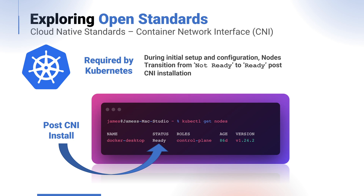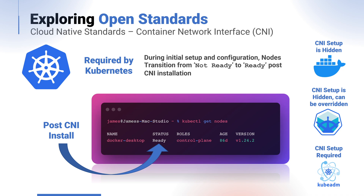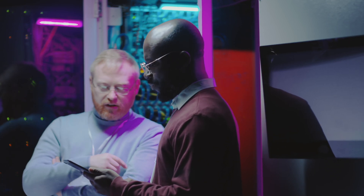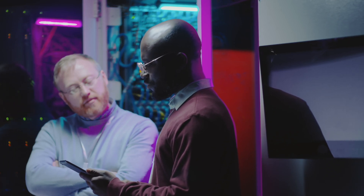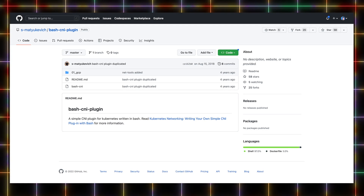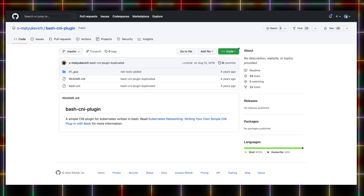A CNI compatible implementation needs to be installed to transition the Kubernetes nodes from not ready to ready. Some convenient Kubernetes distributions, like the one embedded with Docker Desktop, will do this for you. Minikube will also do this automatically during setup, and optionally you can override the choice of CNI. Others like KubeADM require that you choose and install a compatible CNI layer as part of the installation process. Personally, I like CNI as an example of an open standard — the plugin specification is relatively simple, and there are examples showing how to make your own CNI, even with simple bash shell scripting.